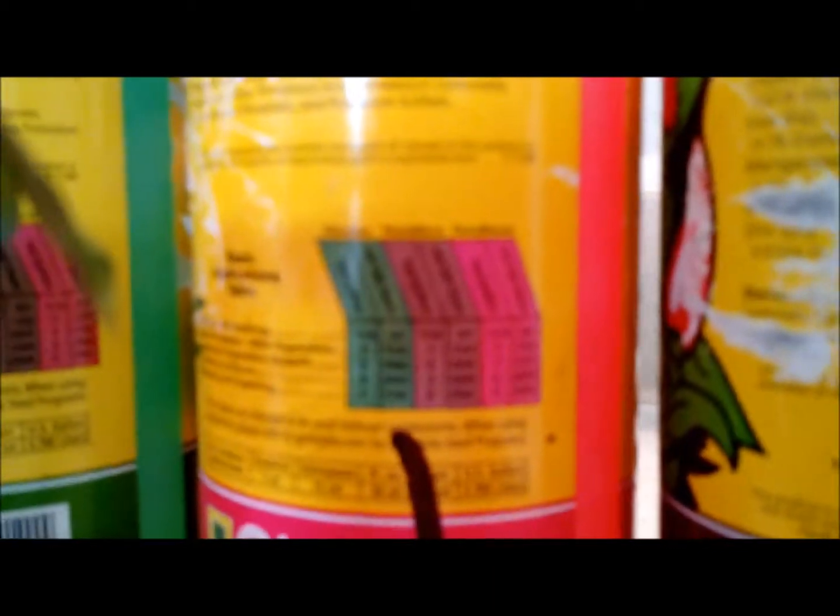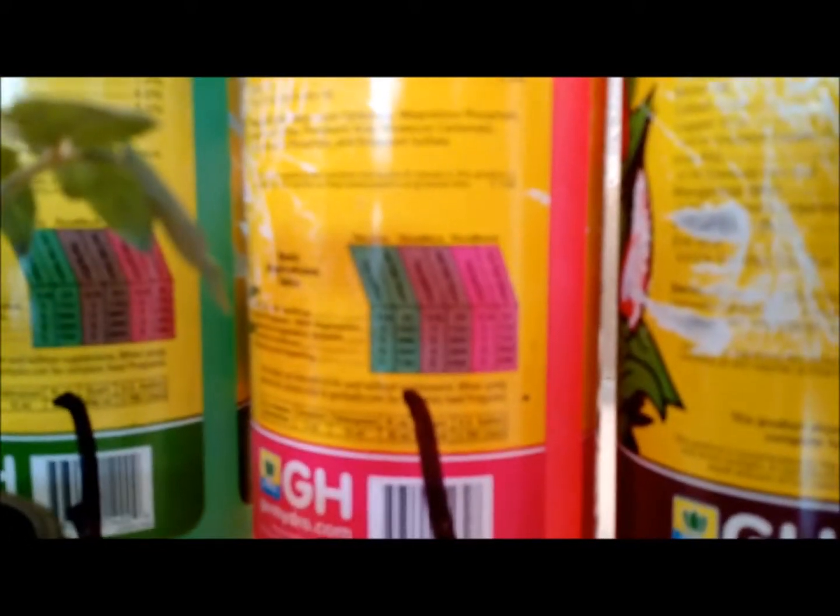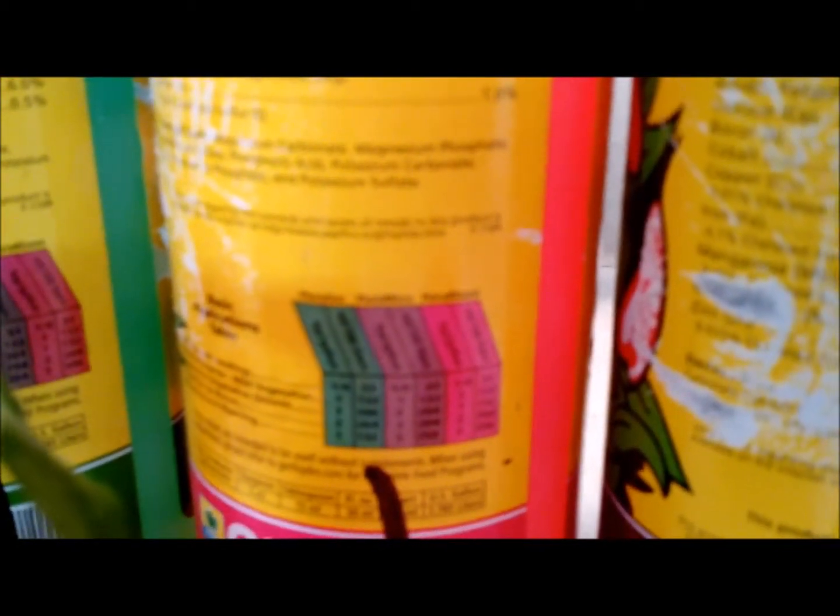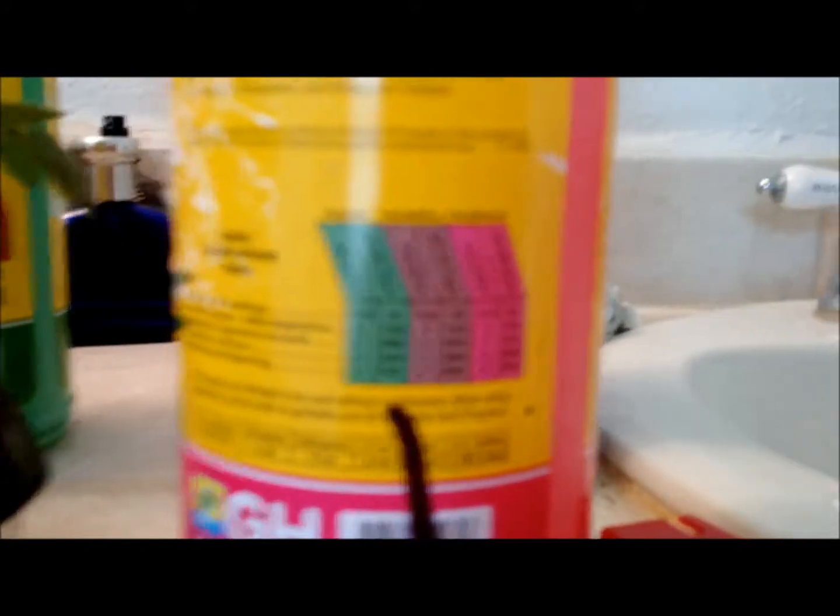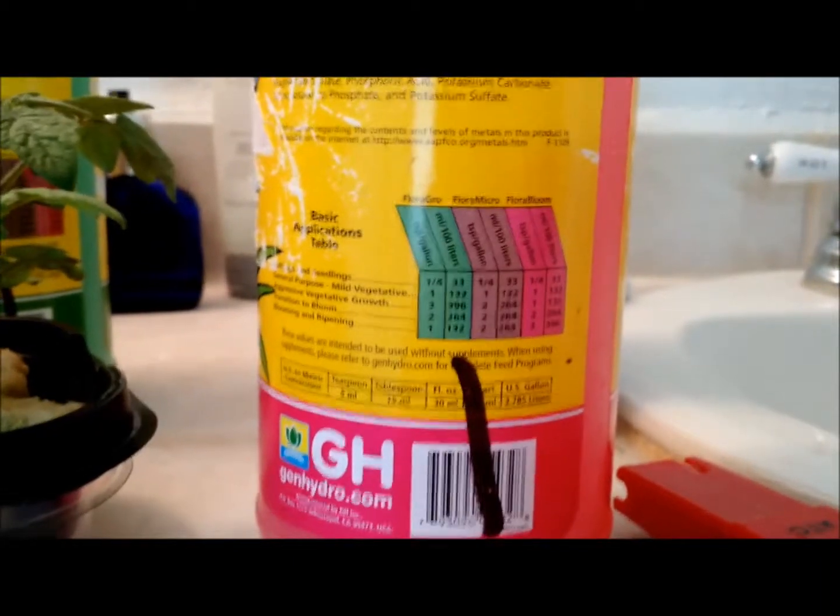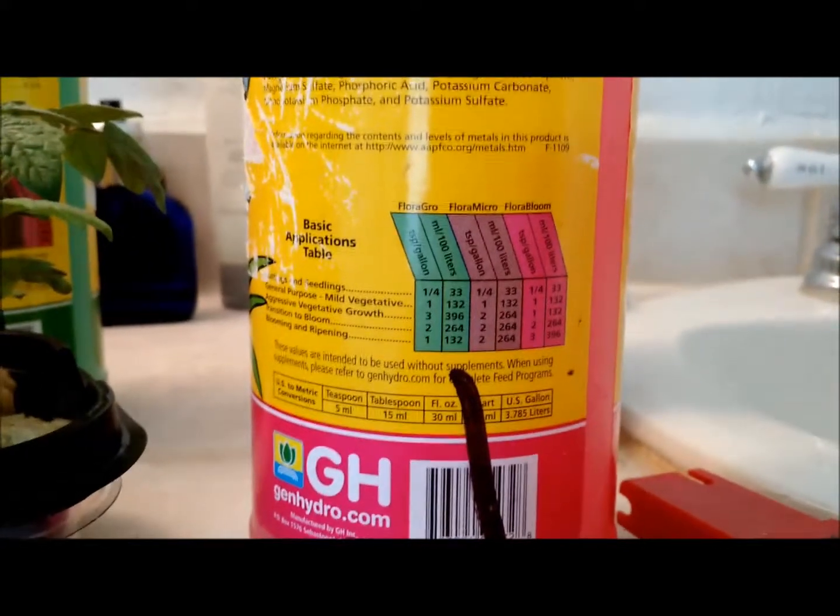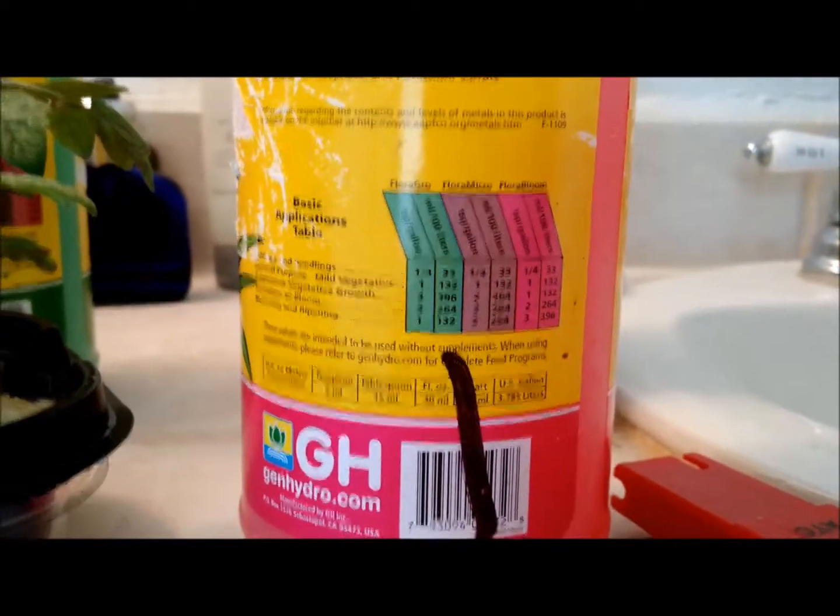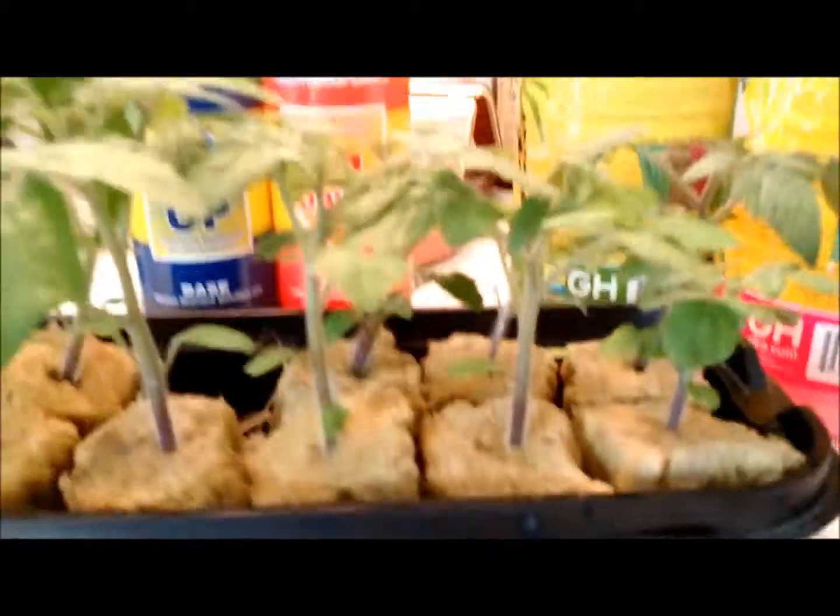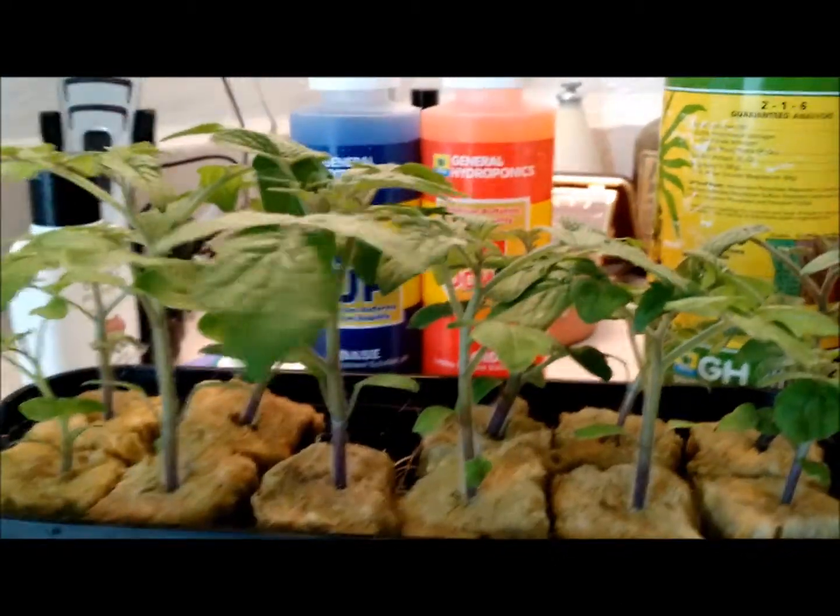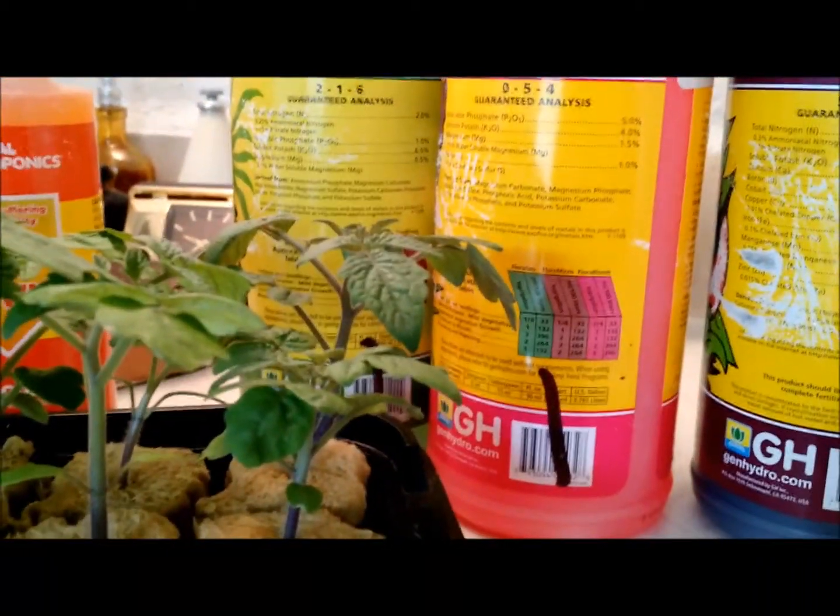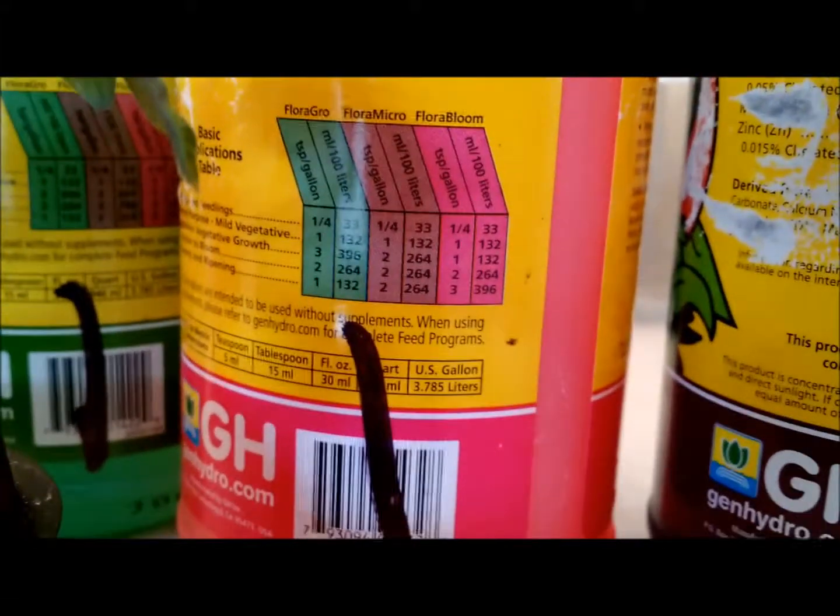If you look right here, it actually tells you that different plants - I'm trying to get a better view for you - you'll see here that each one of these has different applications and as the plants go from just vegetative to flowering, you'll use different varieties of the three of these. Because these plants are still almost seedlings but not quite - these are almost actually ready for sale at a store - I'm going to use the second category which is just for mild vegetative. That's one teaspoon per gallon.